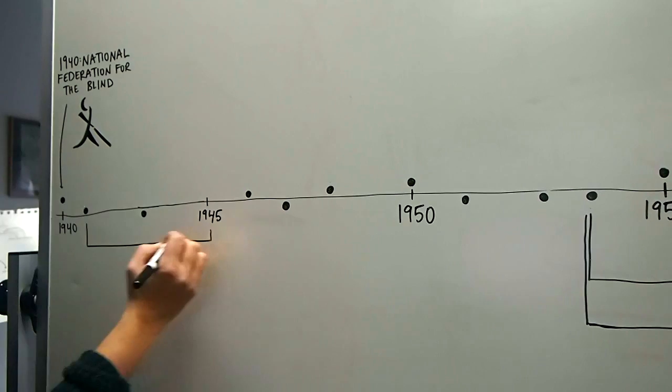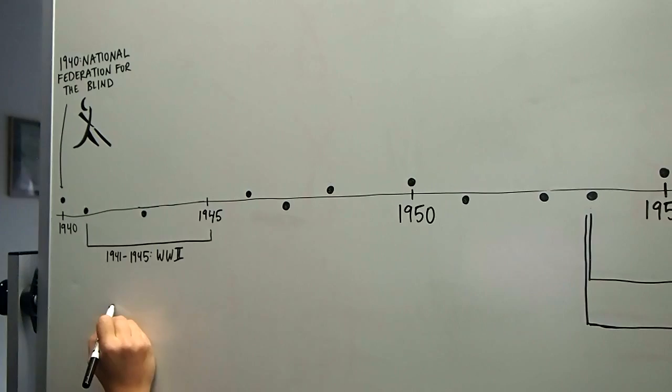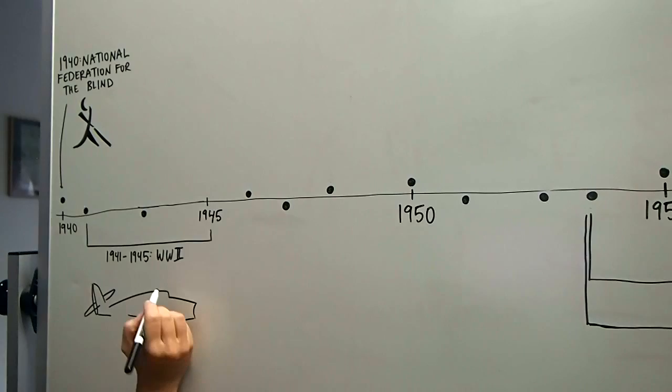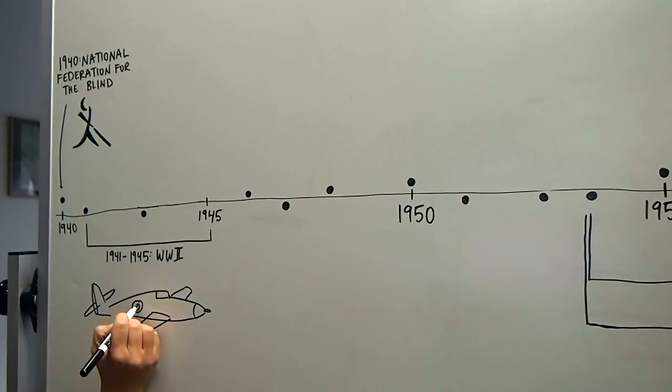The next year, in 1941, the United States formally entered World War II. The U.S. was involved in World War II for four years, during which over 600,000 wounded veteran soldiers returned to the U.S., requiring health care and rehabilitation services.